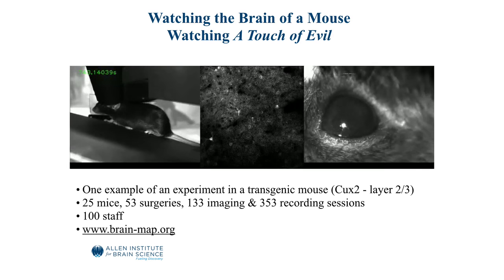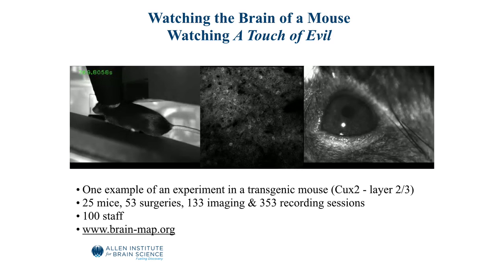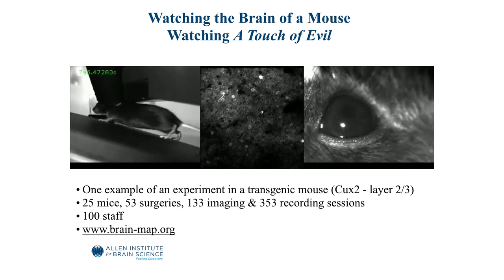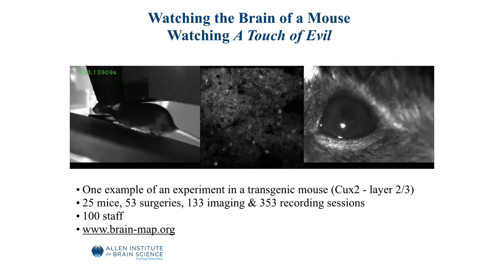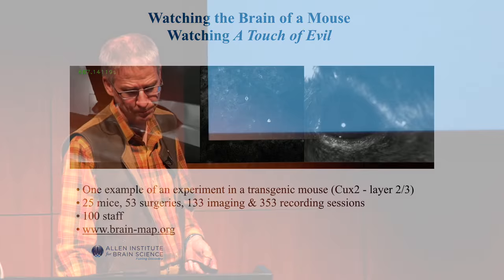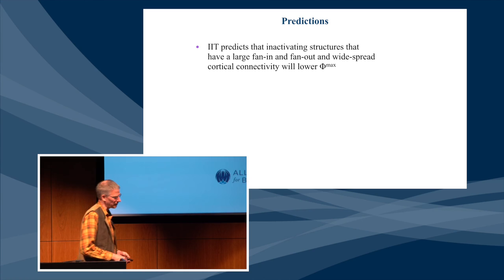Here you see a mouse running while watching a movie — in this case the classic Orson Welles film Touch of Evil — and you can see GCaMP6 activity. We monitor the eye and lots of other metadata, all available at brain-map.org. In principle, given that we have both cellular data and wide-field imaging data, we can estimate measures like phi that have direct relevance to consciousness.